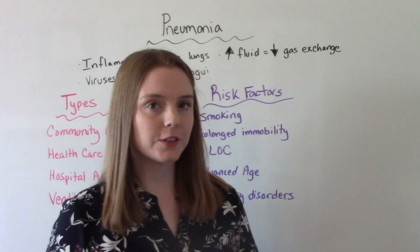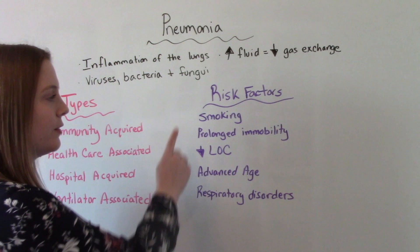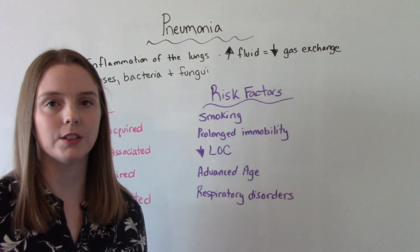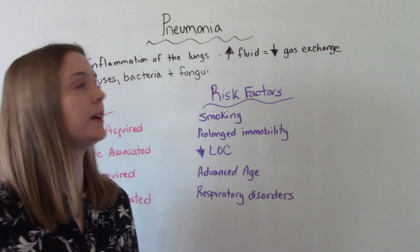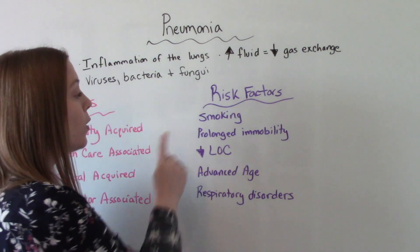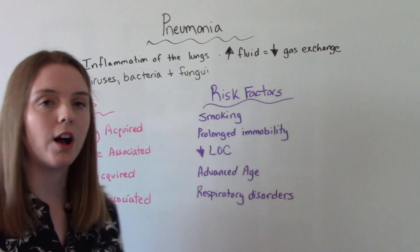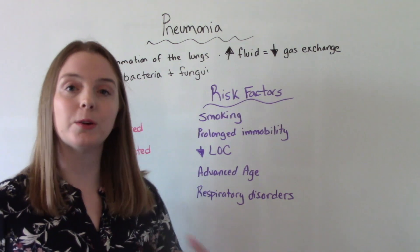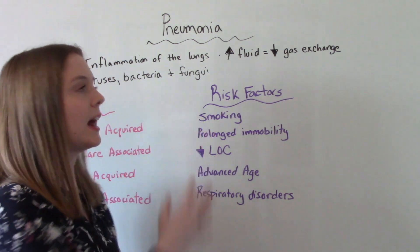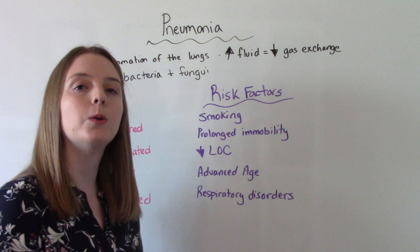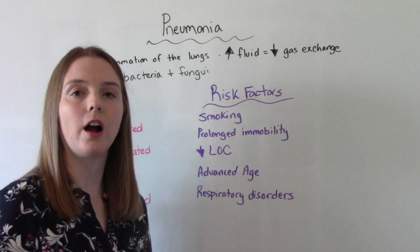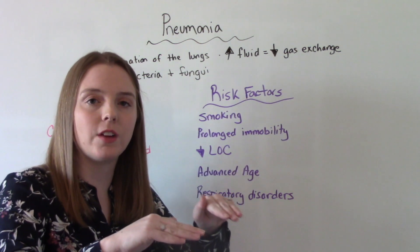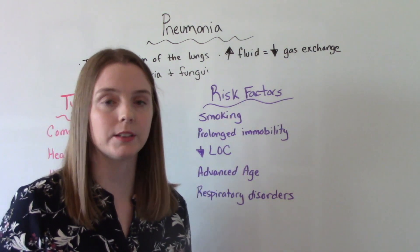So who's at risk for pneumonia? Our big one, of course, is smokers — cigarette smokers are high-risk patients for developing pneumonia. Those who have prolonged immobility are also at risk. It's important to get our bodies up and moving around; that helps us breathe and helps with gas exchange. When we're immobile for long periods of time, everything just kind of sits down there in the base of our lungs.